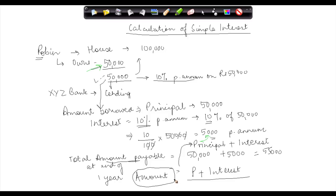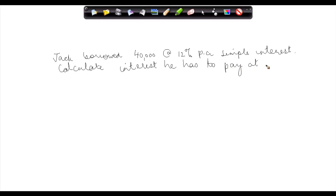So this was the concept of simple interest. Now, let us take one problem on simple interest. Suppose Jack borrowed... okay, let me change the amount. We've already considered 50,000 earlier. 40,000 rupees at the rate of 12% per annum simple interest. Calculate interest he has to pay at end of year 1.